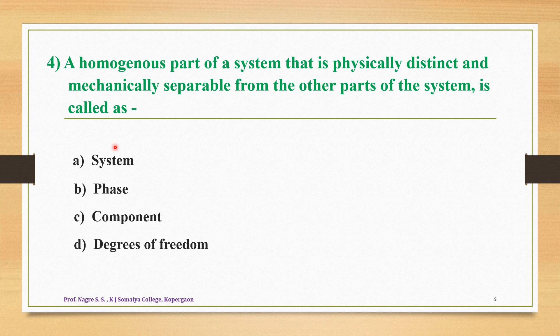Question number four: a homogeneous part of a system that is physically distinct and mechanically separable from the other parts of the system is called as — option A is system, option B is phase, option C is component, and option D is degrees of freedom. The correct answer is option B — it is called a phase. A phase is a homogeneous part of the system that is physically distinct and mechanically separable from other parts, meaning phases of a system are separable from one another.